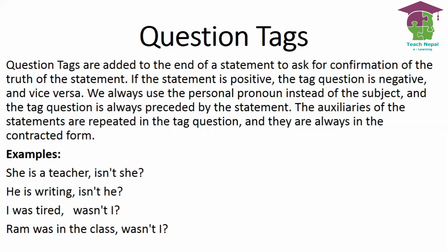There are some things we need to know. We always use the personal pronoun instead of the subject — for example, 'Ram' in a statement becomes 'he'. The auxiliaries of the statement are repeated in the tag question, and they are always in the contracted form.